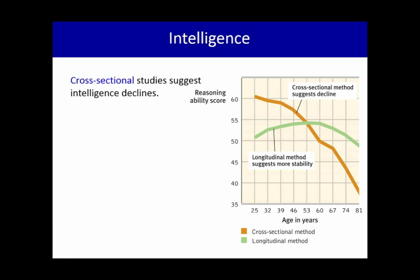If we look at the orange bar on this graphic, we see what is called the cross-sectional method. And what it suggests is that intelligence declines. See how sharply the orange line is dropping off.